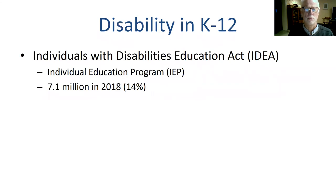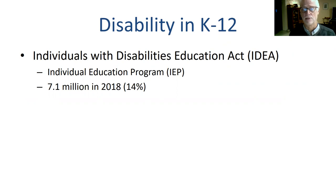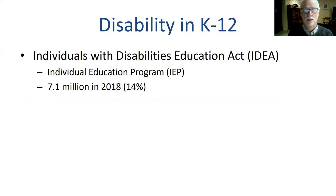Let's talk about disability in K through 12. One group are those served under the Individuals with Disabilities Education Act, commonly called IDEA. Under that program, a student would have an Individualized Education Program, an IEP, which sets the educational goals for the student as well as any accommodations the student might need to succeed in school. It might say that a student isn't capable of doing computer science and should be doing something else. In the United States, there are about 7.1 million students in 2018, or 14% of the 50 million students in K through 12 public education.